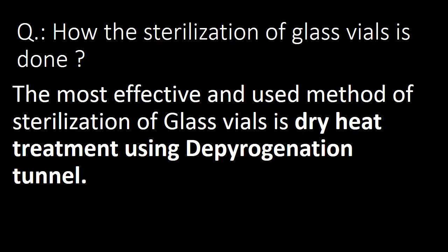Next: how is the sterilization of glass vials done? The most effective and commonly used method of sterilization of glass vials is dry heat treatment using a depyrogenation tunnel.